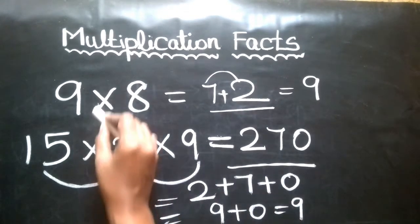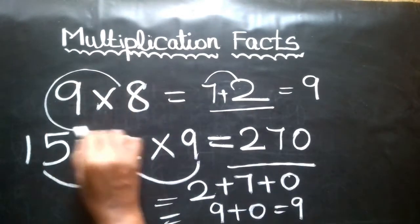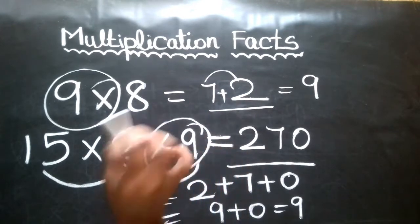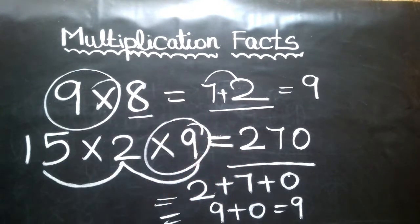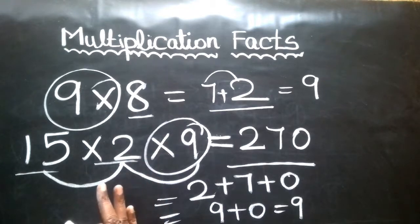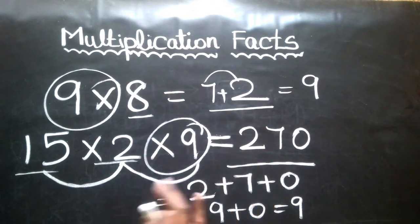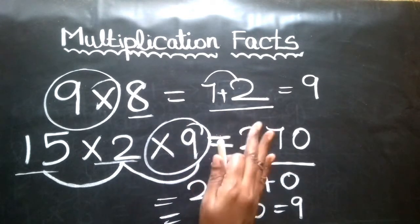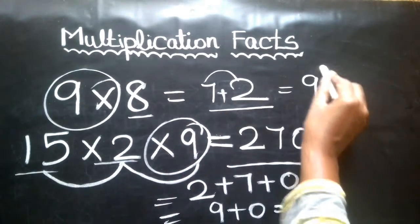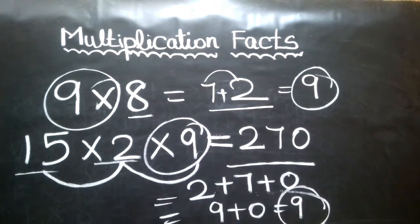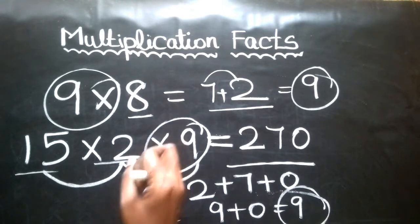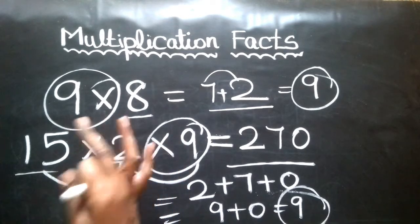So, 9 times any number — you have to find out the digit sum. The digit sum will always be 9 for the 9 times table. So for 9 times any number, you can work out the answer in just a few seconds.